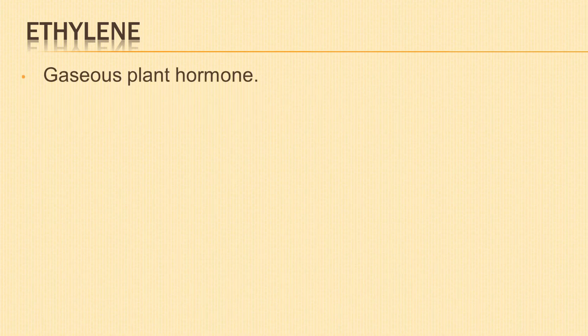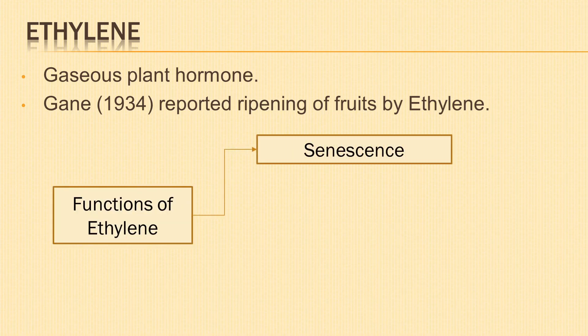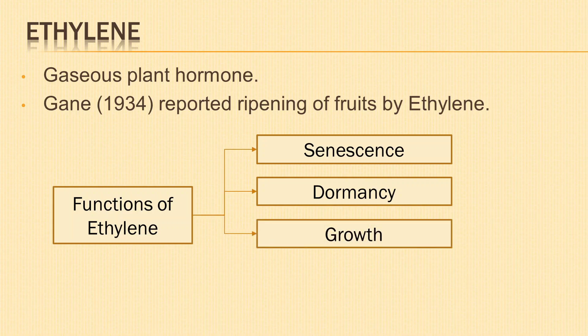Next plant hormone is ethylene. Ethylene is the gaseous plant hormone. Ginner in 1934 reported that ethylene synthesized by plants promotes ripening of fruits. Functions of ethylene: plant organs show accelerated senescence in the presence of ethylene. Application of ethylene helps in breaking the dormancy of seeds and buds of many species and overcomes dormancy of potato tubers. Ethylene stimulates transverse expansion but inhibits longitudinal growth. Ethylene is used for commercial ripening of fruits.